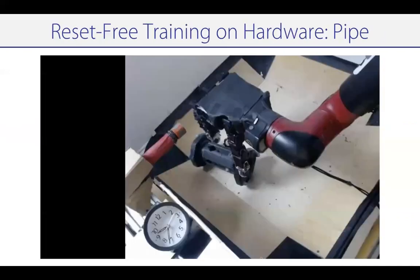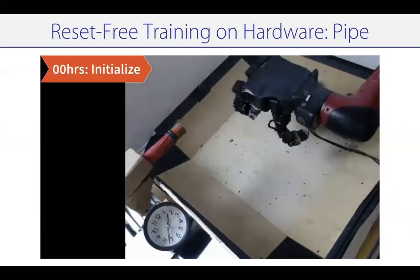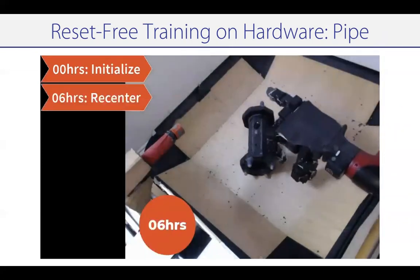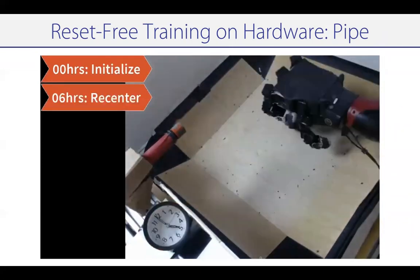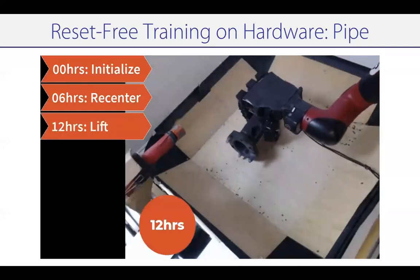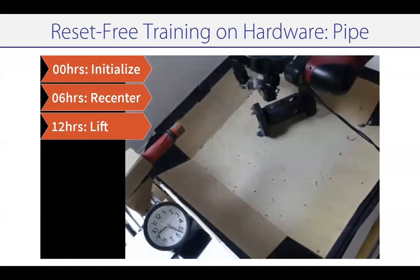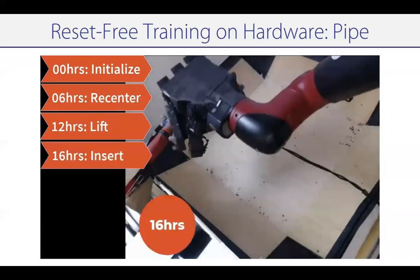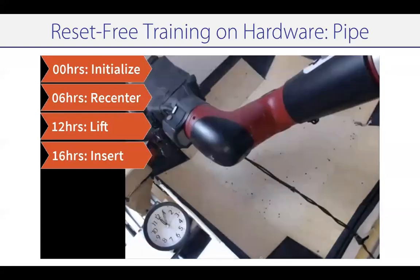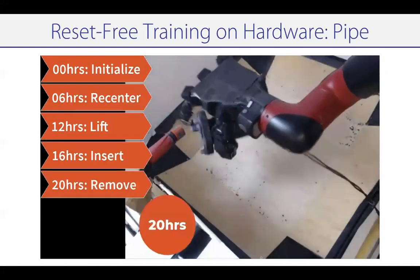The overall training procedure looks something like this. Initially, we don't really know how to pick up or reposition the object, so we spend a lot of time trying to reposition it in the middle of the arena. After around six hours, we can recenter it, and this starts to provide resets for lifting the object. Once the object can be successfully lifted, we can then practice inserting it into the hose attachment. Once it's been inserted, we can practice doing removal, and this whole process can repeat so we keep getting better at all of the tasks.